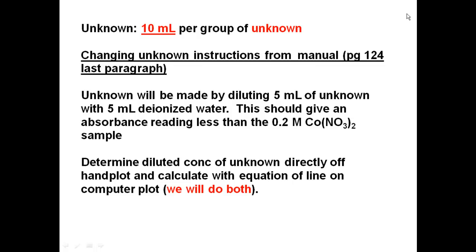Determine the diluted concentration of the unknown directly from the hand plot, or by using the equation of the line to calculate it. You must do a hand plot as well as an Excel computer plot; use the equation of the line for the computer plot. Make sure the equation of the line shows up on the plot. There's also an R² value — the closer it is to 1, the better the fit. Aim for 0.9 to 0.95 range. If it's 0.6, your data is not very good. Also make sure you label your axes and title your graph using about three-fourths of the page.